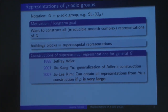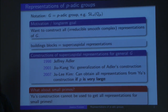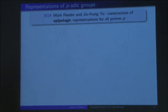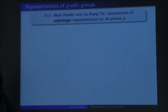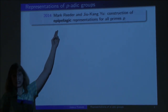So the question is: what happens for small primes P? Unfortunately, Yu's representations do not give us all representations for small primes P, so we have to work harder and find something new. Recently, in 2014, Mark Reeder and JKU gave a new construction that works for all primes P, and what they construct are so-called epipelagic representations.